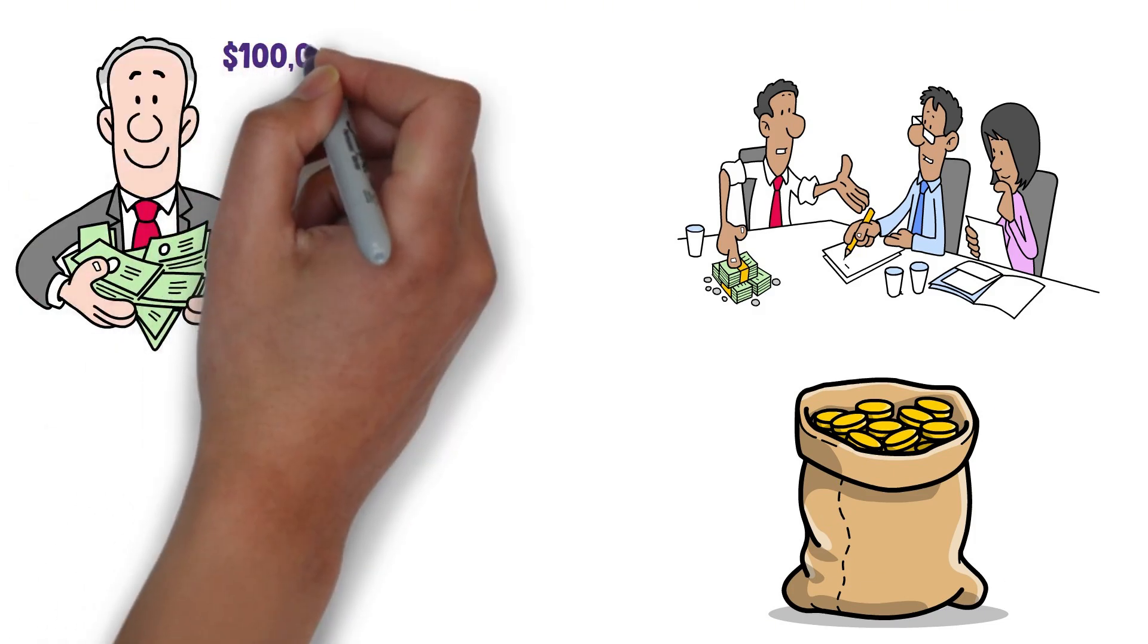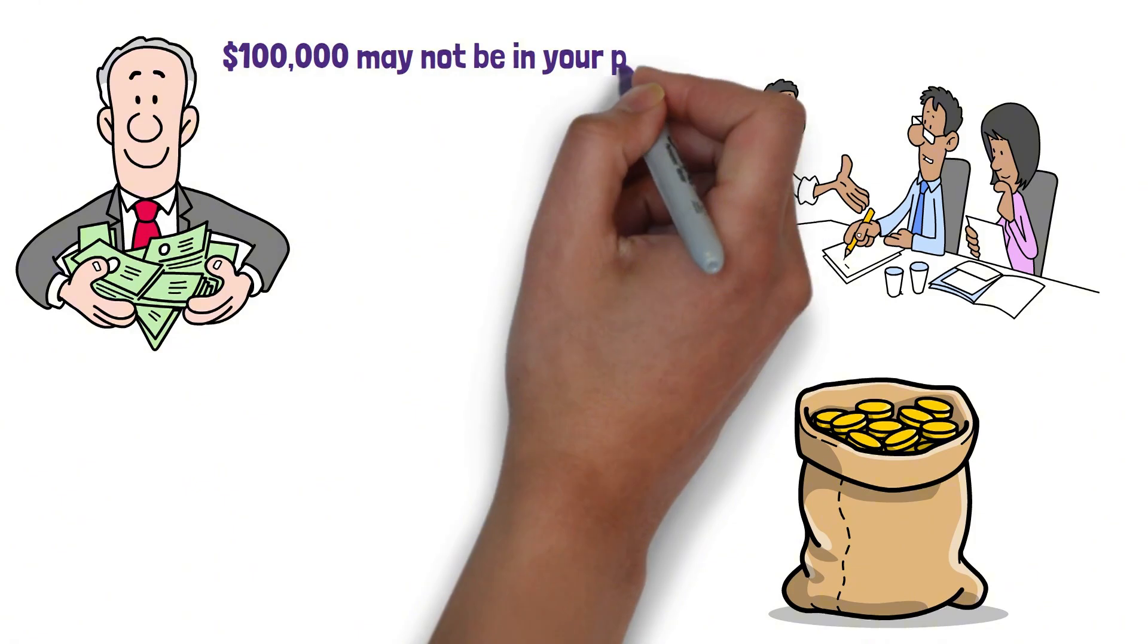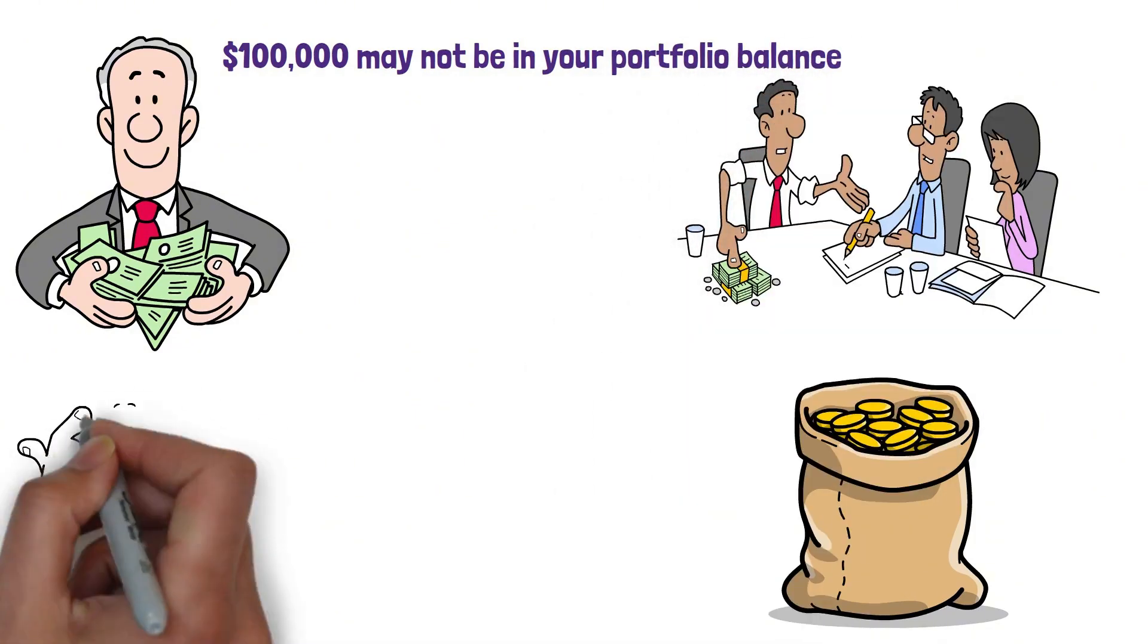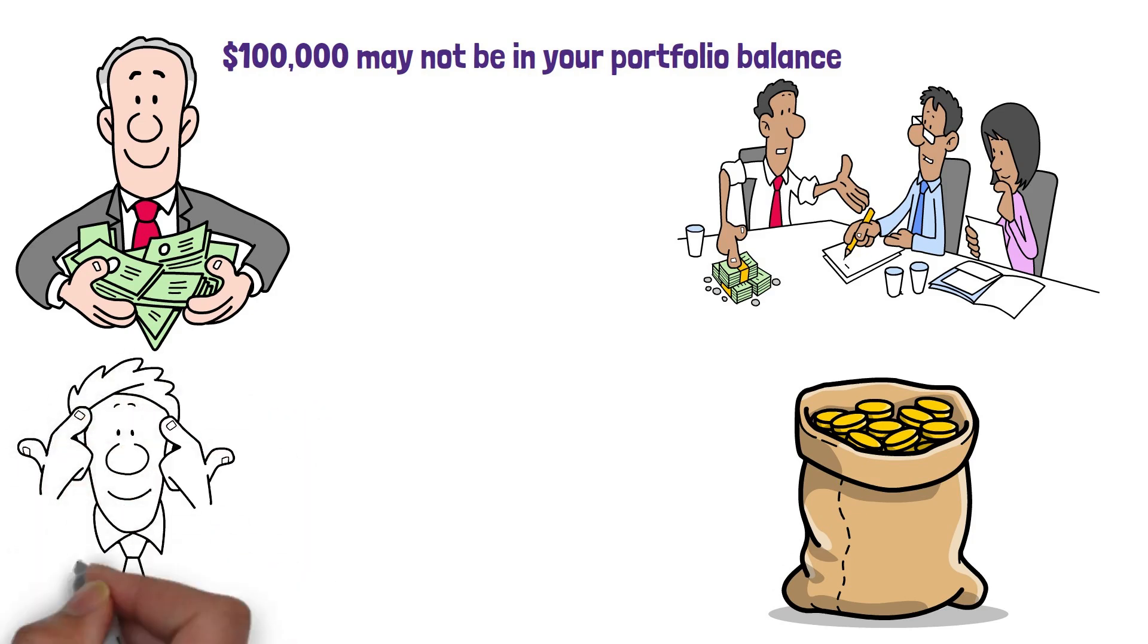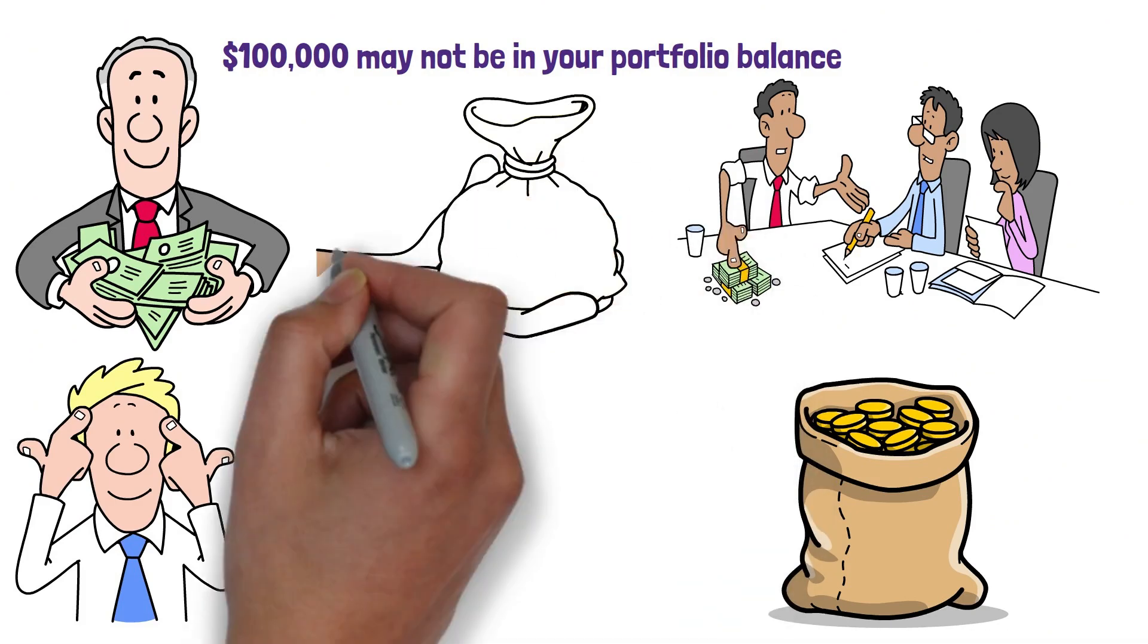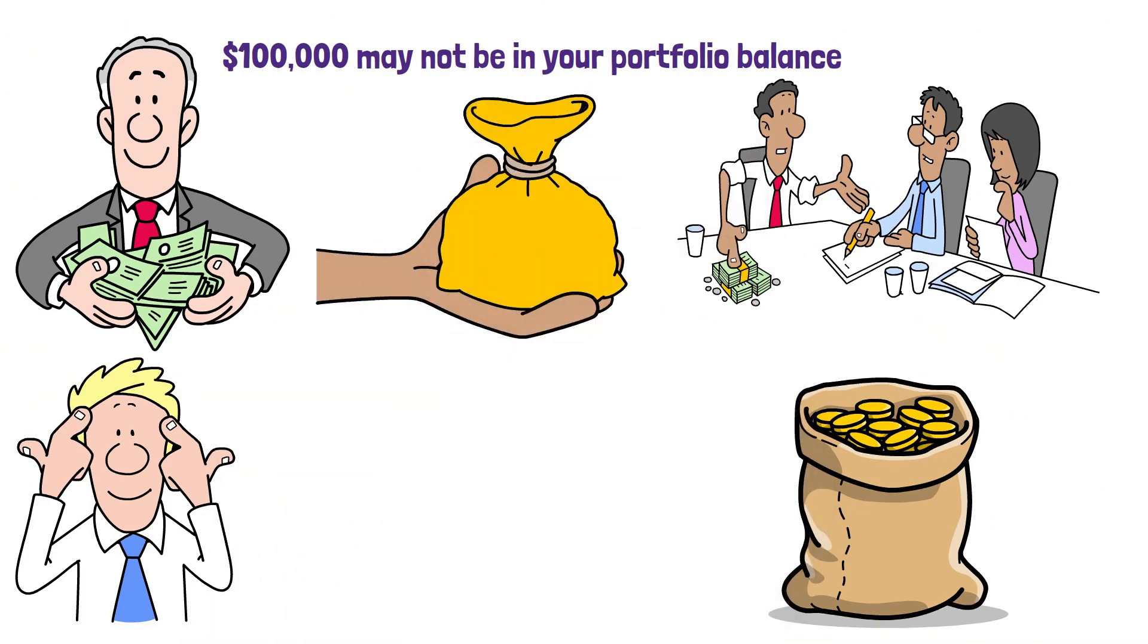You see the biggest difference after $100,000 may not be in your portfolio balance, it may be in your head. The psychological shift $100,000 provides. There's a moment every investor experiences that is hard to describe until you felt it. It happens somewhere around $100,000.